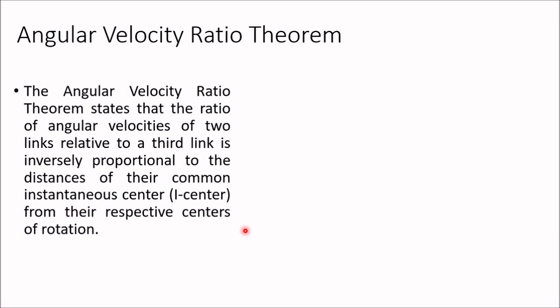The velocity at any point of a link can be determined once we know the angular velocity. This is based on the concept of the angular velocity ratio theorem, which states that the ratio of angular velocity of two links relative to a third link is inversely proportional to the distances of their common instantaneous center from their respective centers of rotation. This theorem can be represented in equation form as ω_x / ω_y = (I_xy · I_1y) / (I_xy · I_1x).